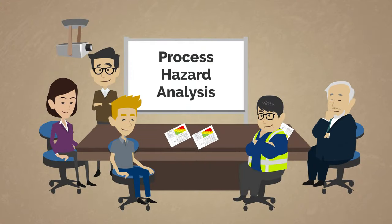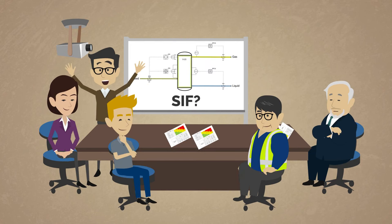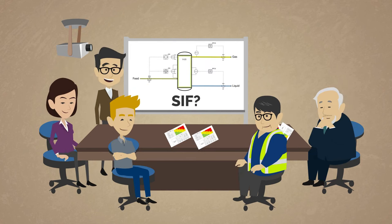The process hazard analysis, typically a HAZOP and LOPA, would identify the specific SIFs required for the process as well as what the associated SIL rating required for each SIF is.